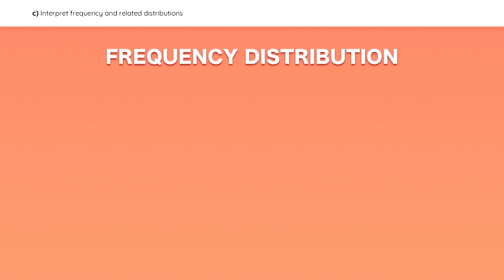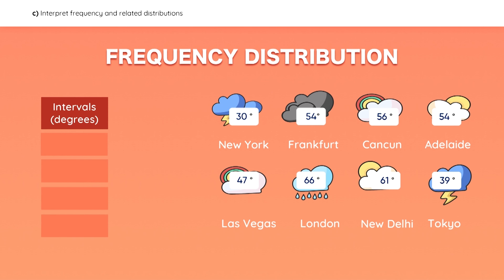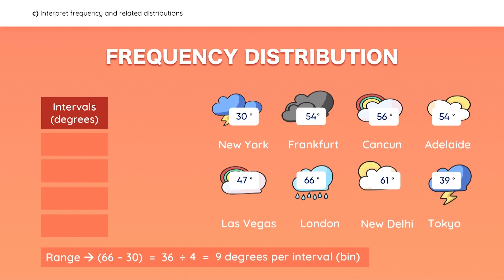Now let's move on to frequency distributions. Take a look at the temperature in these cities. To construct a numerical frequency distribution, first we need to determine a set of intervals. The range of temperature for this data set is 36 degrees, so if we want to have 4 intervals, every interval must contain a range of 9 degrees. So let's label the 4 bins or intervals.